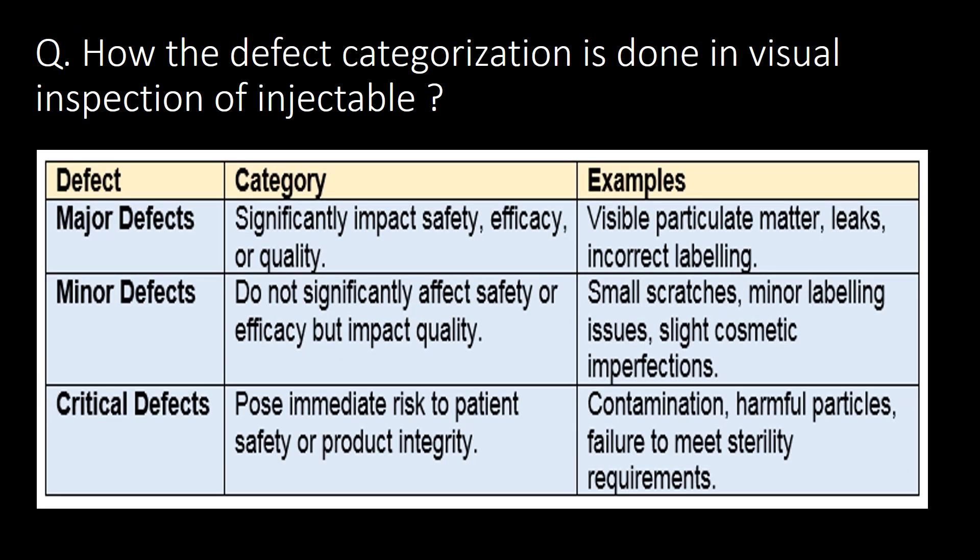How is defect categorization done in visual inspection of injectables? Commonly, defect categorization is done in three categories: first, major defects; second, minor defects; and third, critical defects.